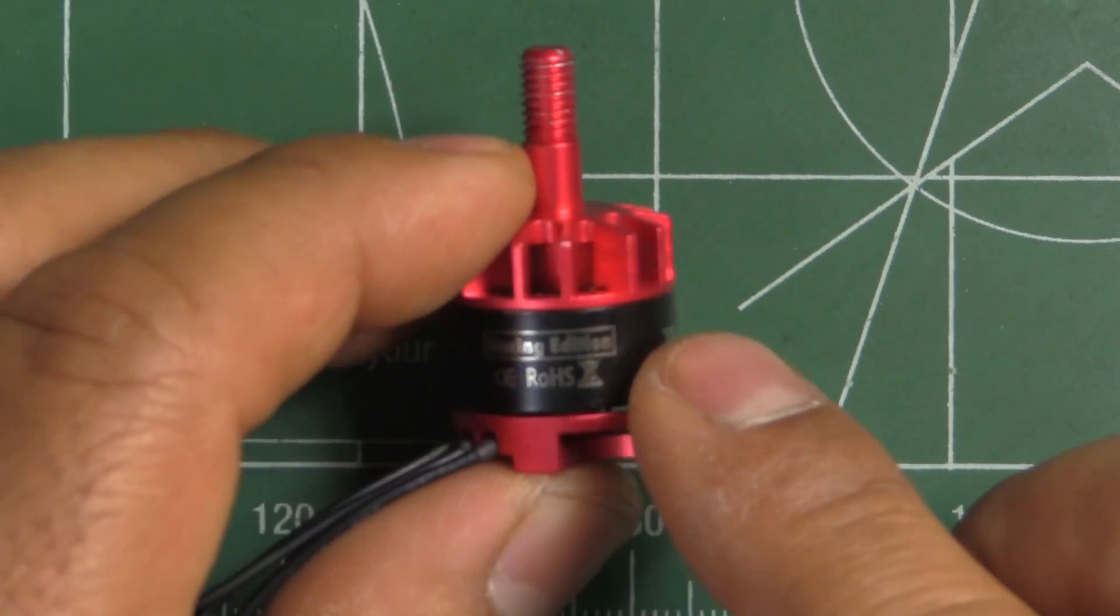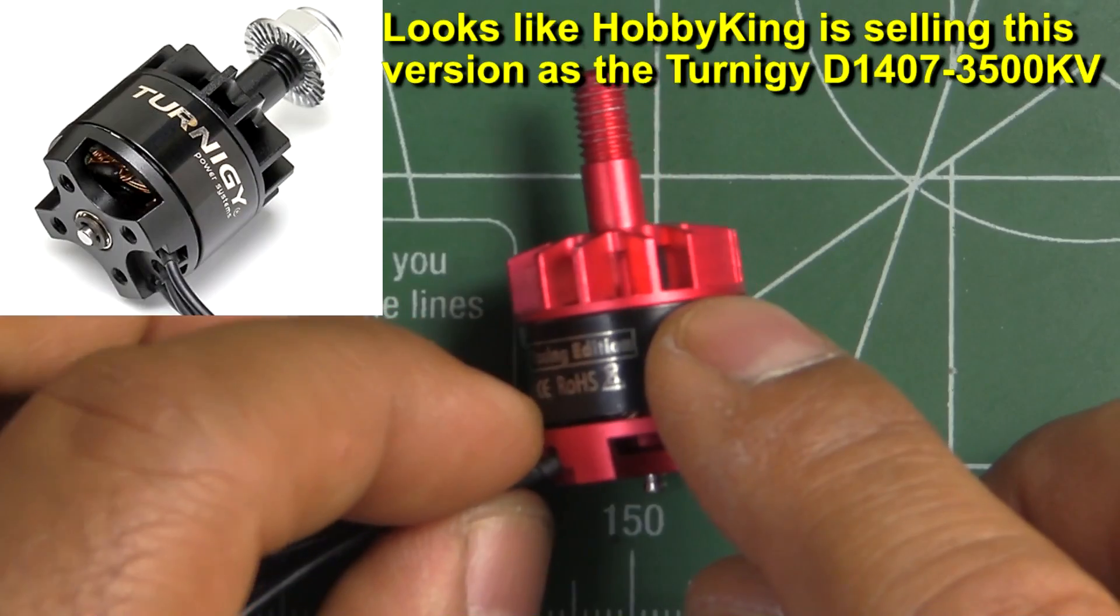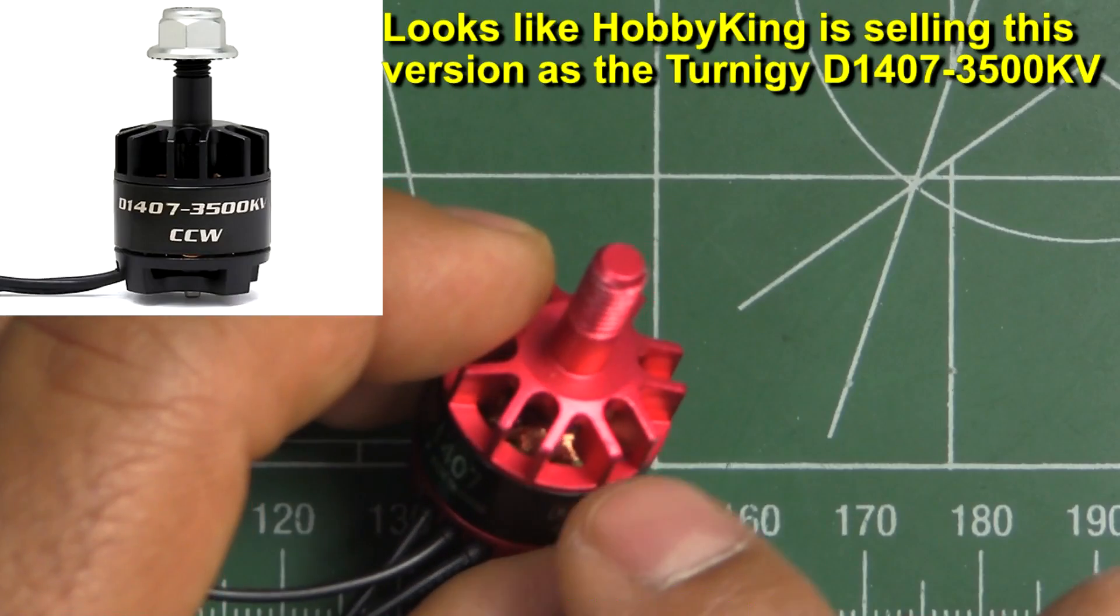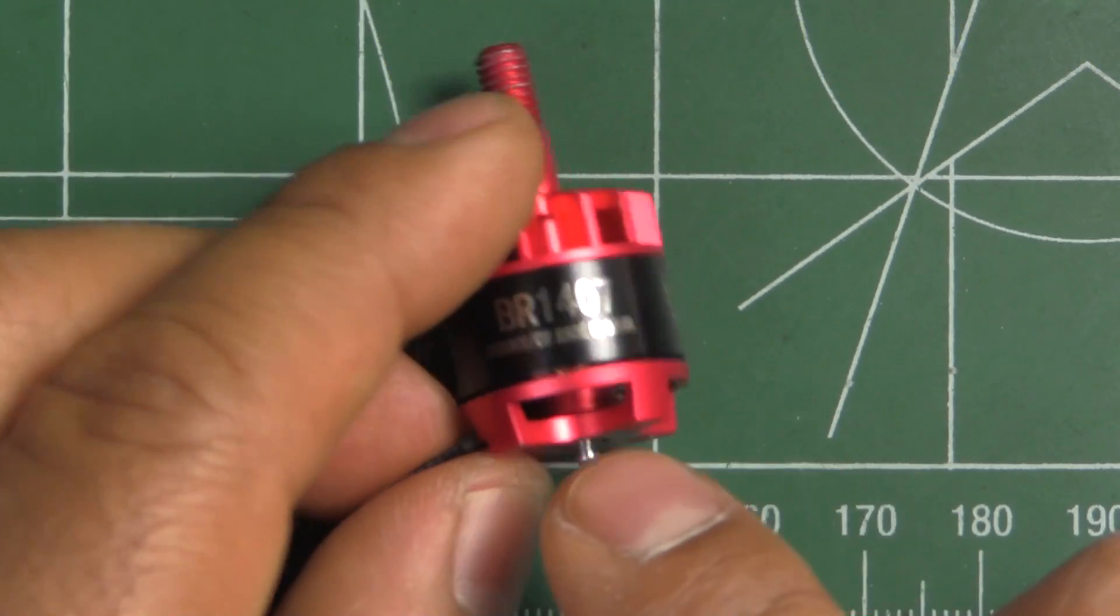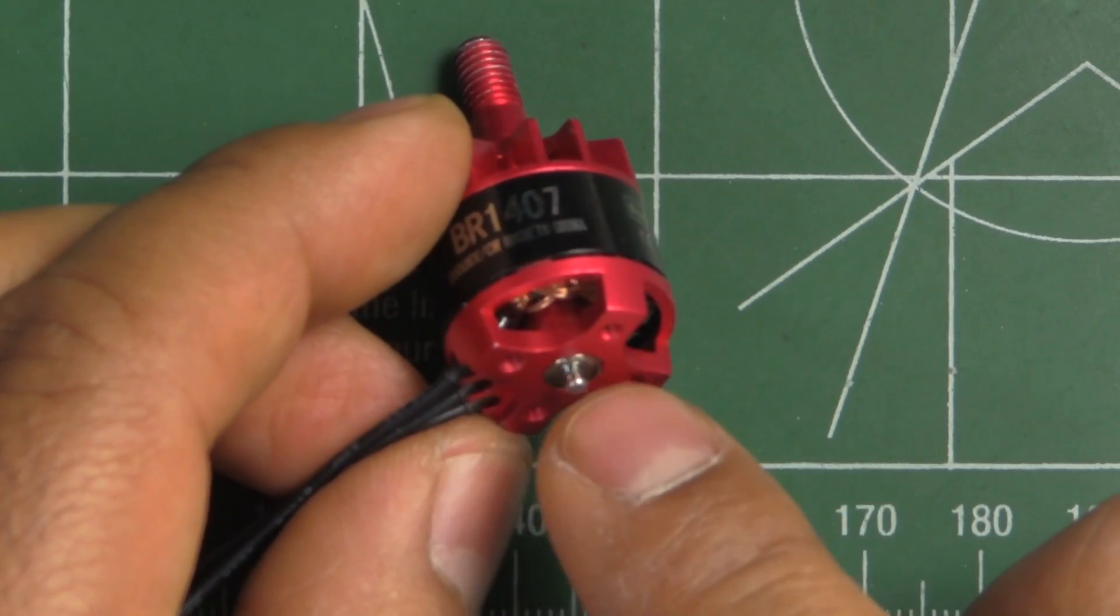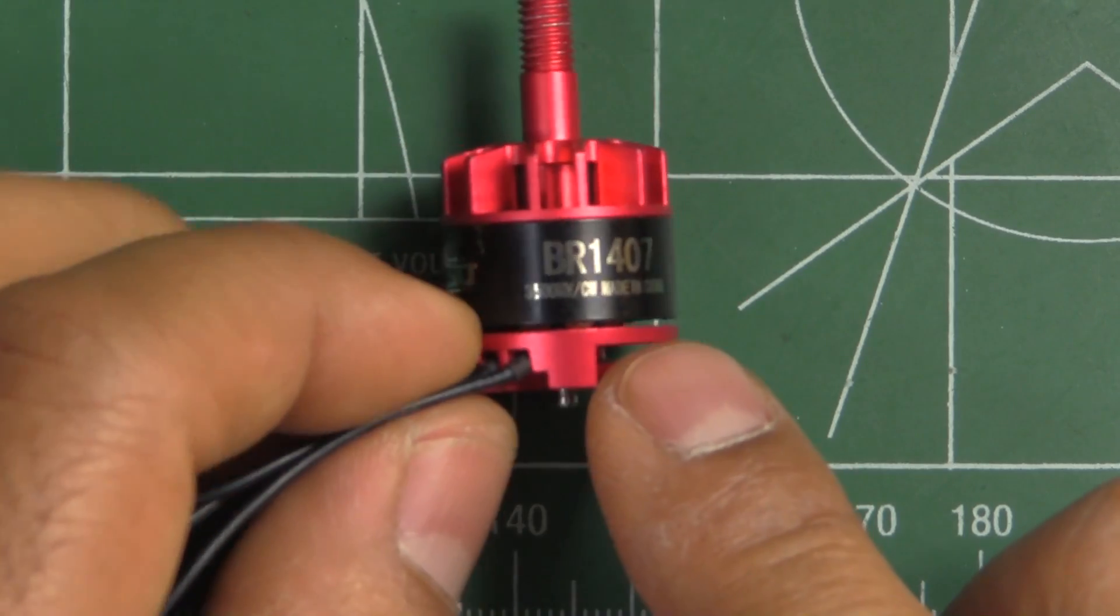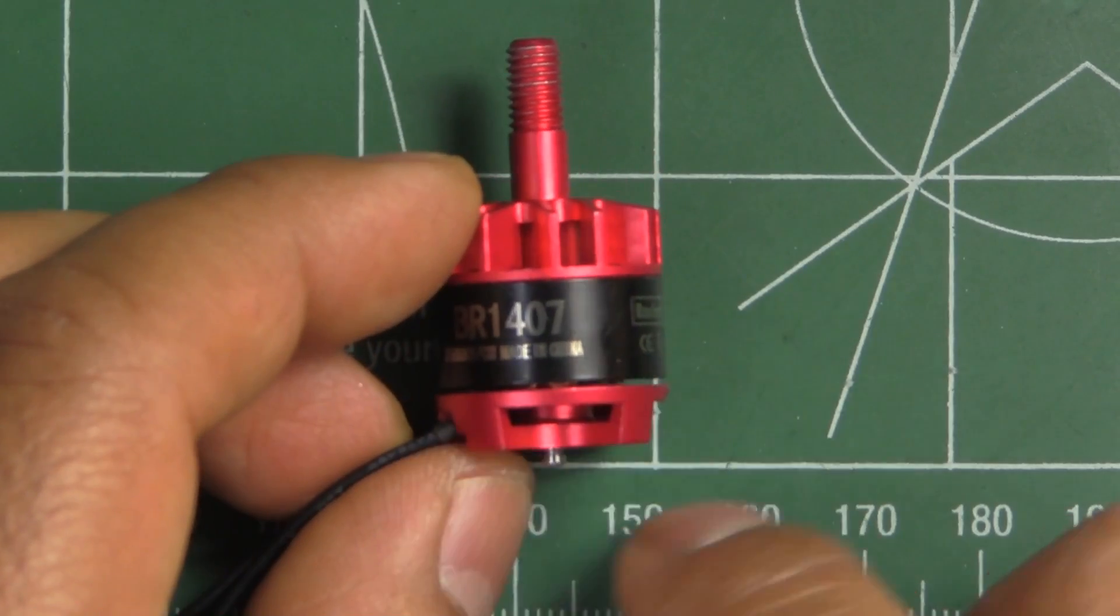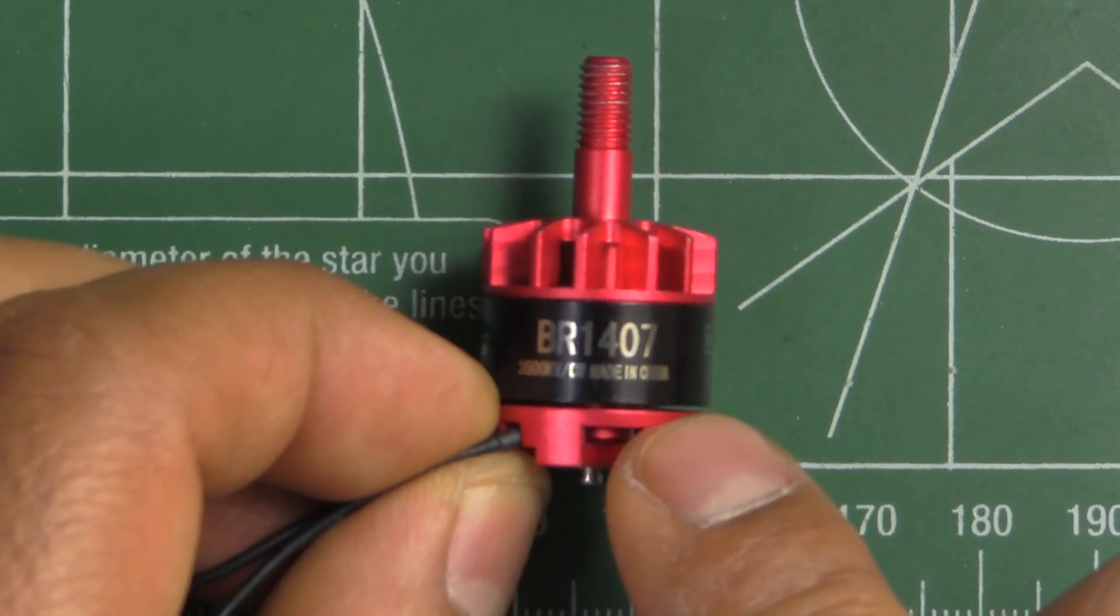So I held on from testing it because I didn't know if it was going to be re-released. So what I'm thinking is they redesigned the bell but the stator and the magnets and everything else is the same. I don't see why they would have to change those parts. So my assumption is the rest of the parts are the same so the performance is going to be pretty similar.